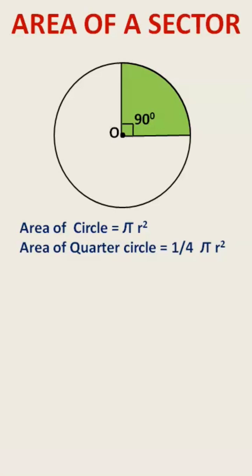This 1 by 4 can be written as 90 by 360 into pi r square. This is 90 which is the angle at the center by the total angle around the center.